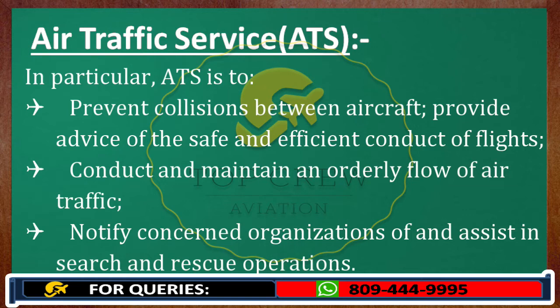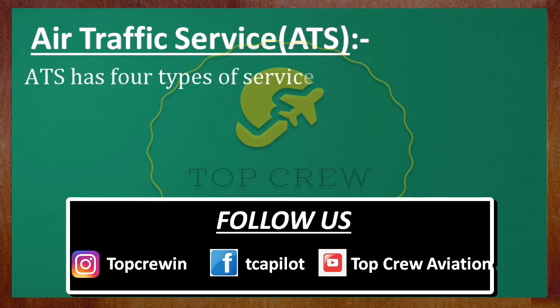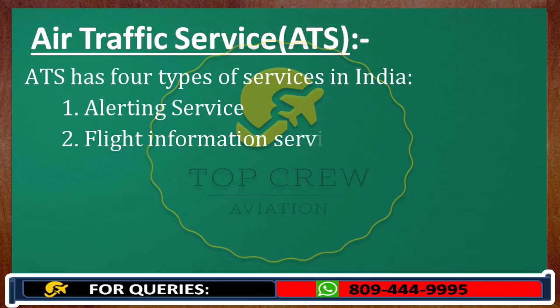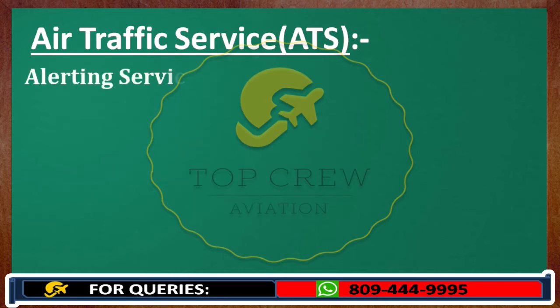I'm sure you've understood the basic idea of what ATS is, its responsibilities, and its major role in aviation. Now let's move further. ATS is divided into four types of services in India: number one is alerting service, number two is FIS — flight information service, number three is advisory service, and number four is ATC.